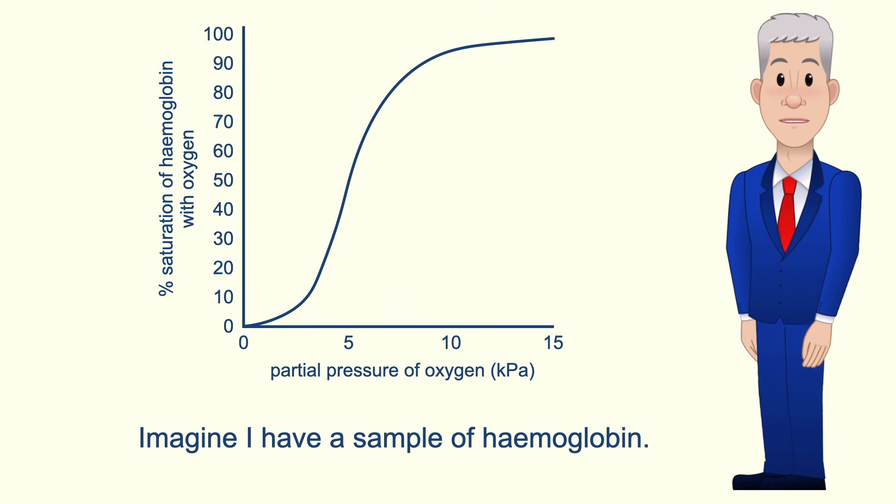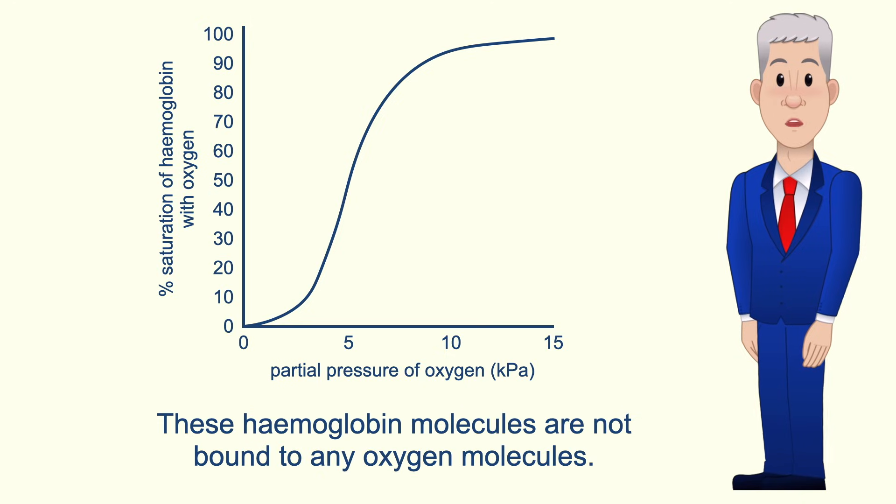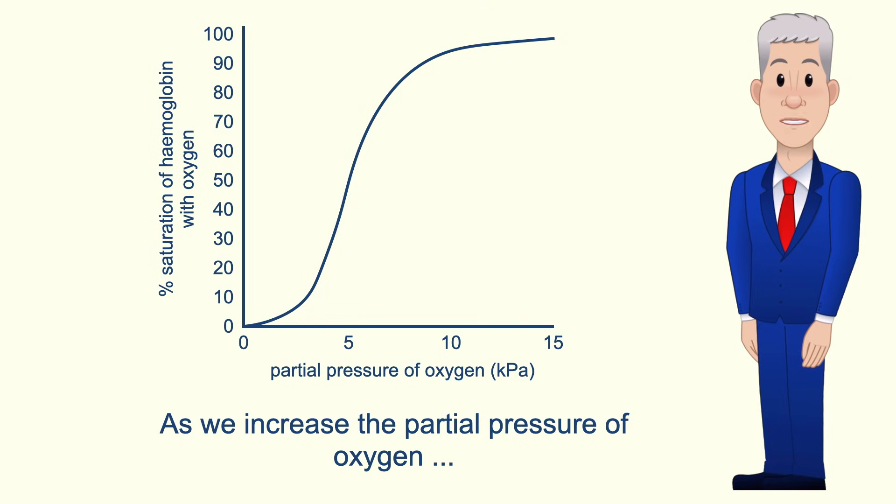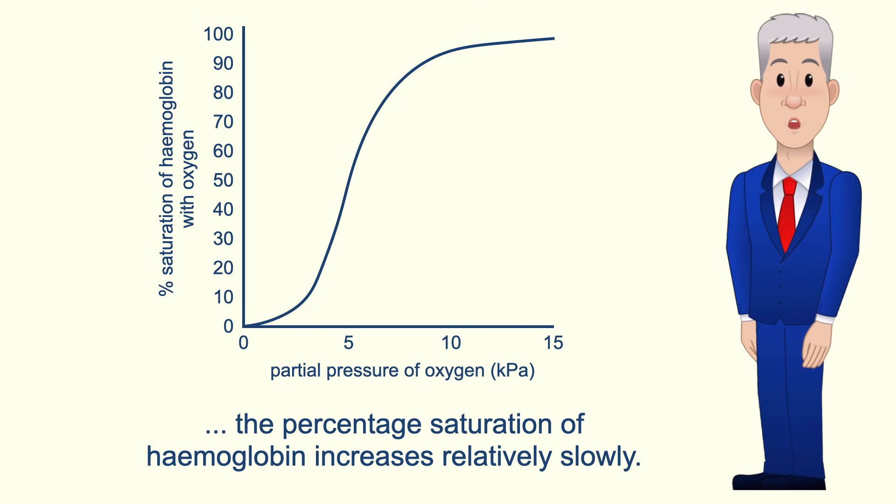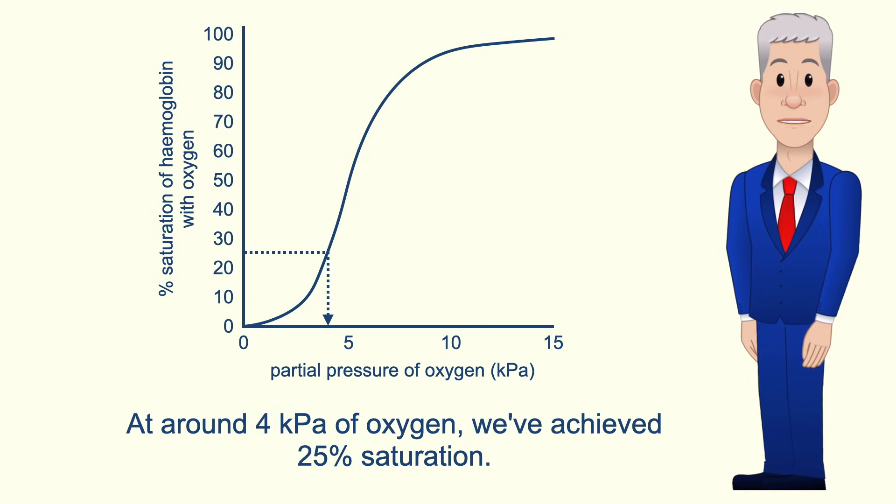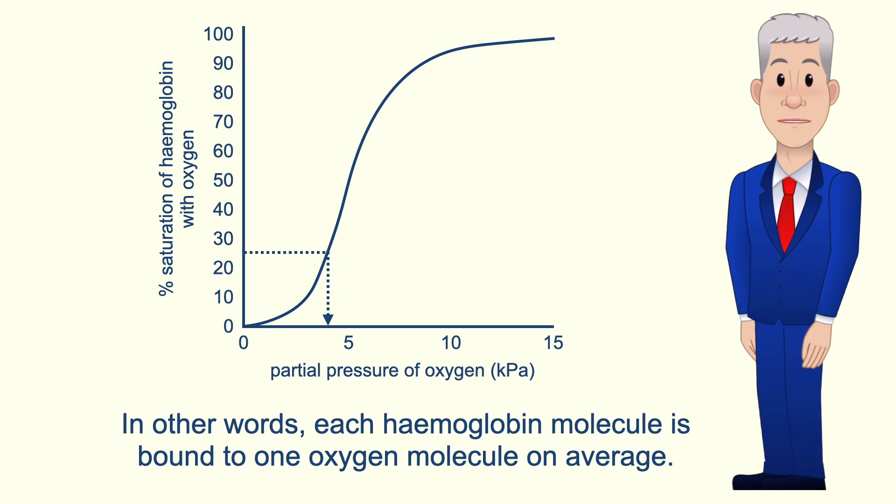Imagine I have a sample of haemoglobin and these haemoglobin molecules are not bound to any oxygen molecules. As we increase the partial pressure of oxygen, the percentage saturation of haemoglobin increases relatively slowly. At around four kilopascals of oxygen we've achieved 25% saturation—in other words, each haemoglobin molecule is bound to one oxygen molecule on average.